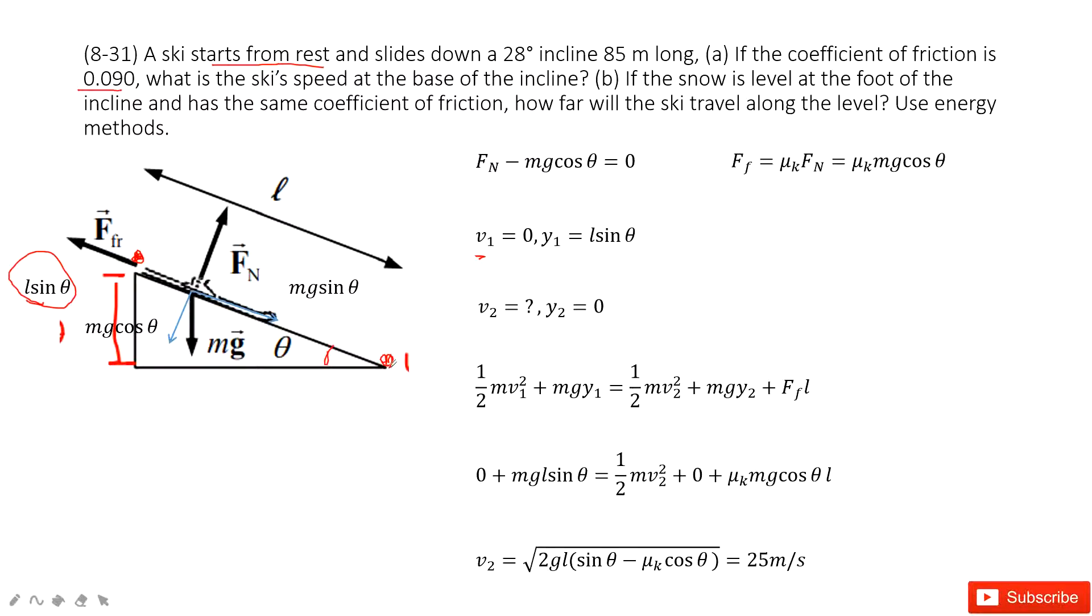At the final position, we have V2 to find and Y2 is 0. During this process, we see which forces do the work: gravity and friction. We must consider the friction because the coefficient of friction is given.